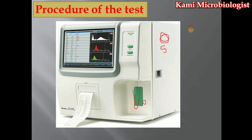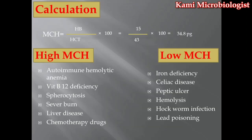In the report, the machine gives you not only the MCHC but all parameters of the CBC, like DLC and TLC — everything we already talked about. If you don't have access to the machine, you can calculate MCHC using the formula: hemoglobin value divided by hematocrit, then multiplied by 100. You can watch the hemoglobin and hematocrit video lectures on my channel.